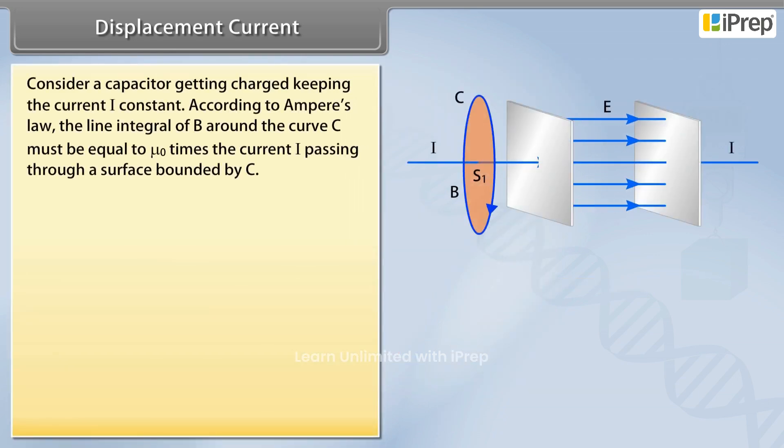Consider a capacitor getting charged keeping the current I constant. According to Ampere's law, the line integral of B around the curve C must be equal to mu naught times the current I passing through a surface bounded by C.